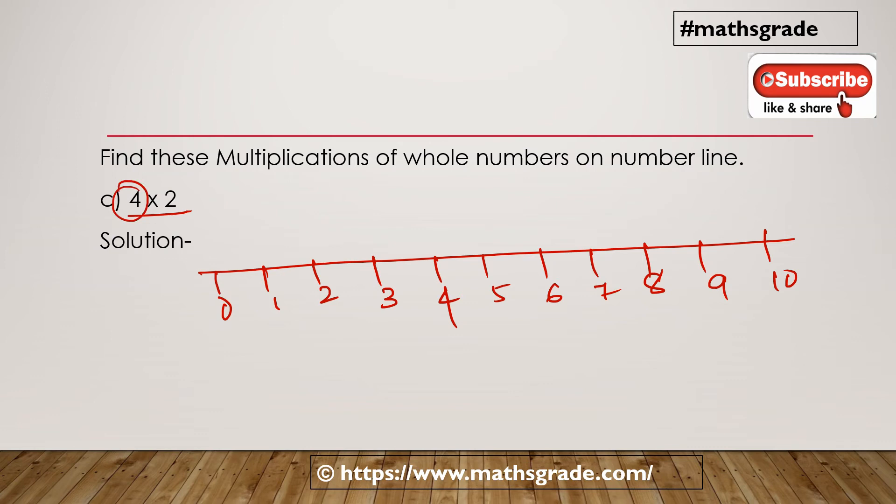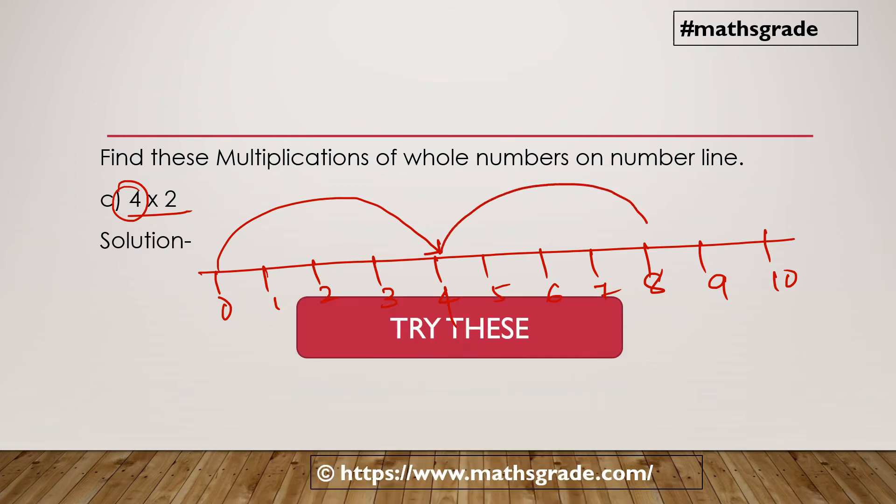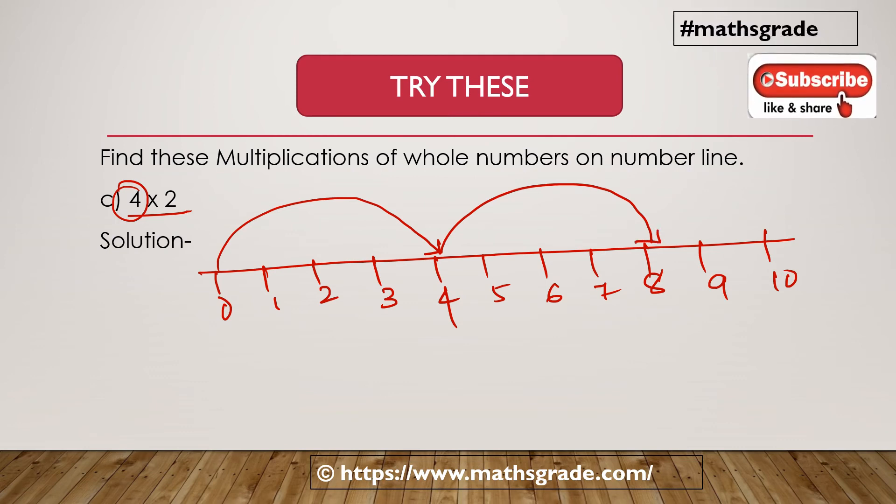Number is 4. So starting from 0, move 4 units. Now it is 4. 4 multiplied by 2, we have to multiply 4, 2 times. So from 4, move another 4 which is equal to 4 to 5, 5 to 6, 6 to 7, 7 to 8. Now it is 8.